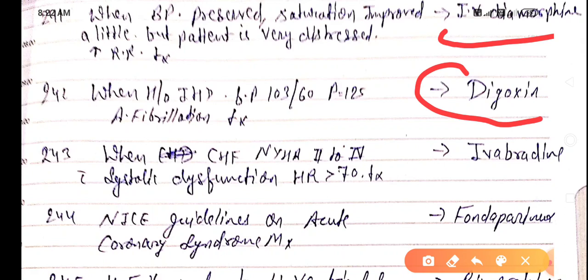When CHF congestive heart failure NYHA second to fourth with systolic dysfunction, heart rate more than 70, treatment is by ivabradine.